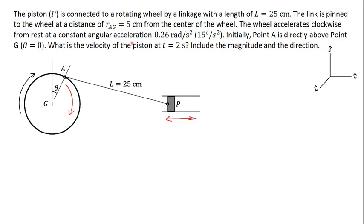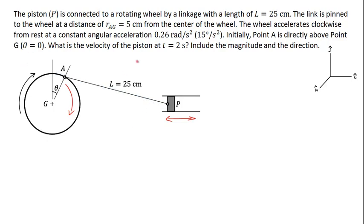The wheel accelerates clockwise from rest at a constant angular acceleration of 15 degrees per second squared. At time zero, point A is directly above the center of the wheel. So at time zero point A would be located right here, and the 25 centimeter linkage would extend from point A at time zero to some position up here. We know that the position of point G has the same Y value as point P.